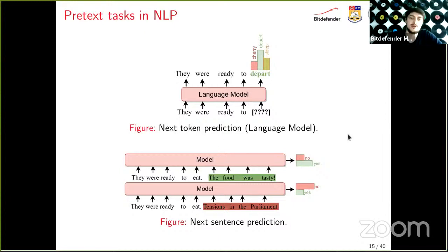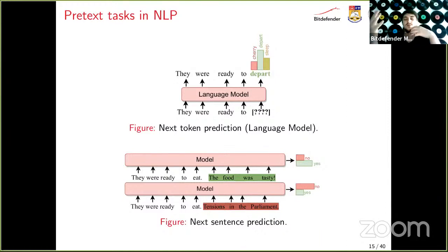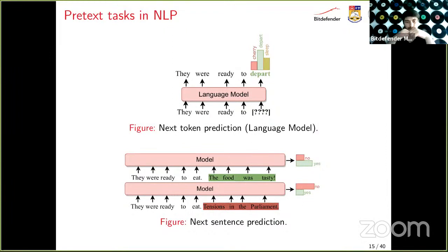In NLP, language models are very popular as self-supervised pretext tasks. One example is predicting the next token: given 'they were ready to go,' the model should complete it with 'depart' and know that 'cherry' would be a bad next word.